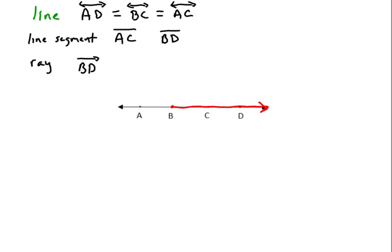Now notice with a ray, if you change the order, so if I have ray DB, notice the order matters in a ray. So DB now is the ray that starts at D and goes in the direction of B. So that is something that is completely different.